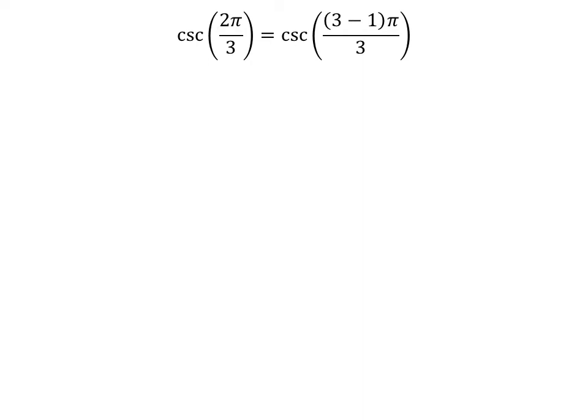We know 3 minus 1 is equal to 2, so cosecant of 2 times pi upon 3 is equal to cosecant of 3 minus 1 times pi upon 3.